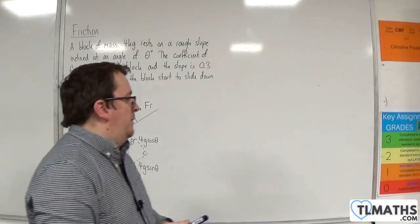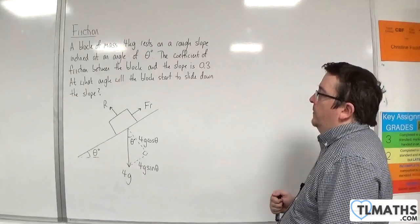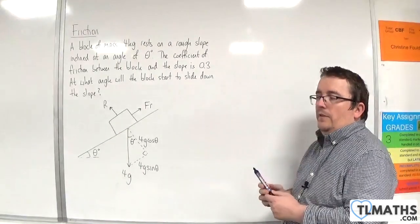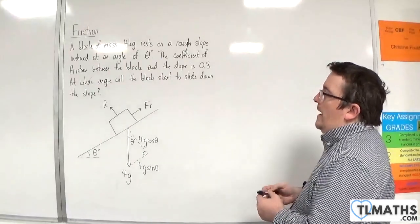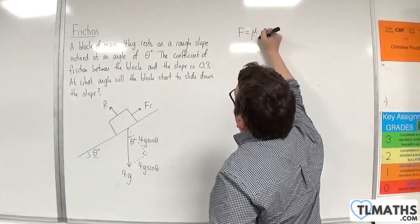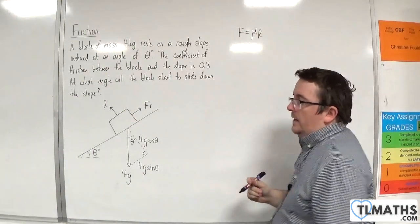Okay, so this is my situation. Now, because it's on the point of sliding down the slope, we know that f is going to be equal to mu r. Okay, so that's the first thing to take account of.